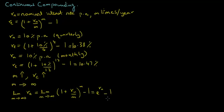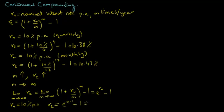We can easily prove this using basic calculus. For the nominal interest rate Rn equals 10% per annum, the effective annual interest rate with continuous compounding equals exponential of 0.1 minus 1, which equals 10.52%.